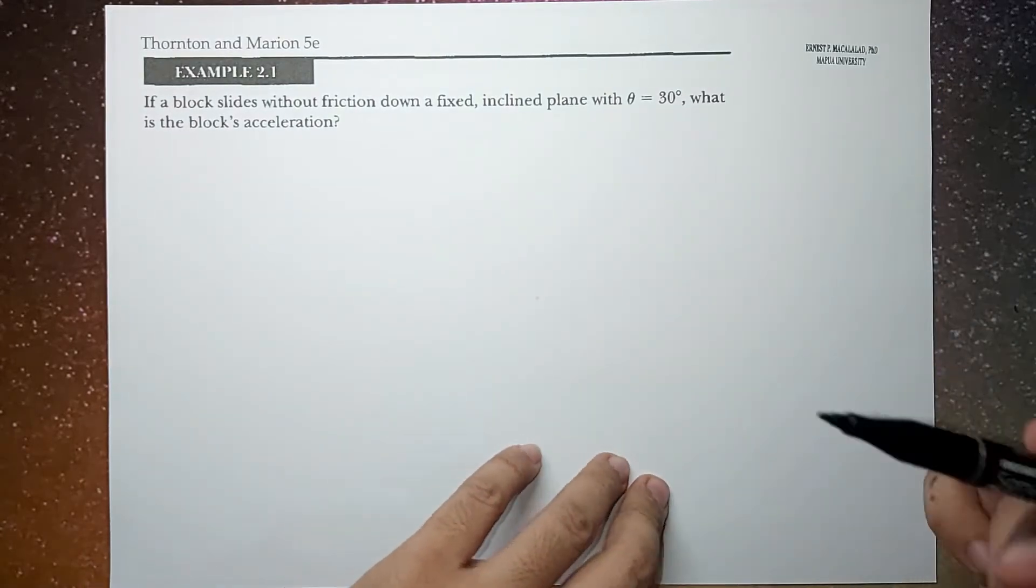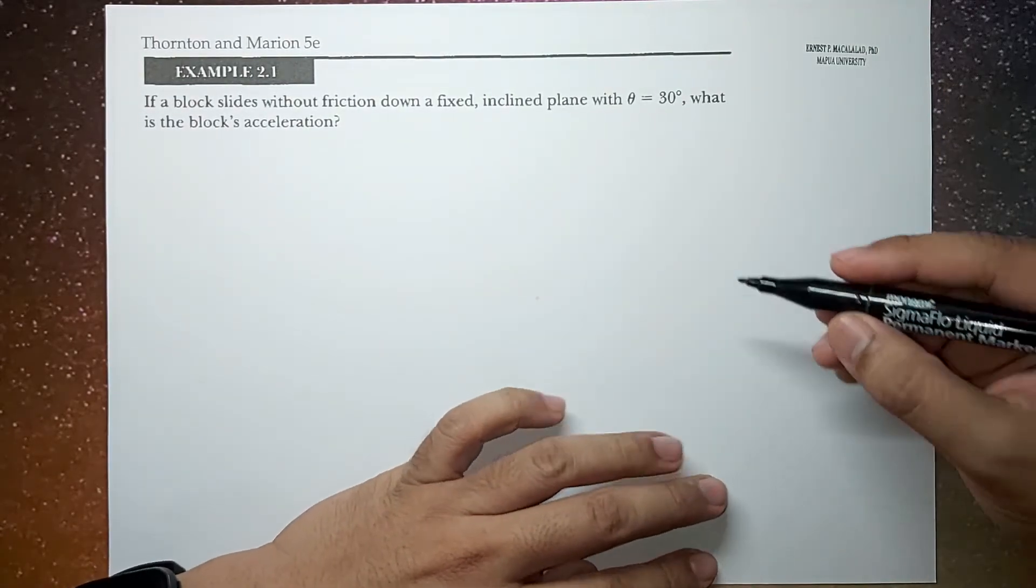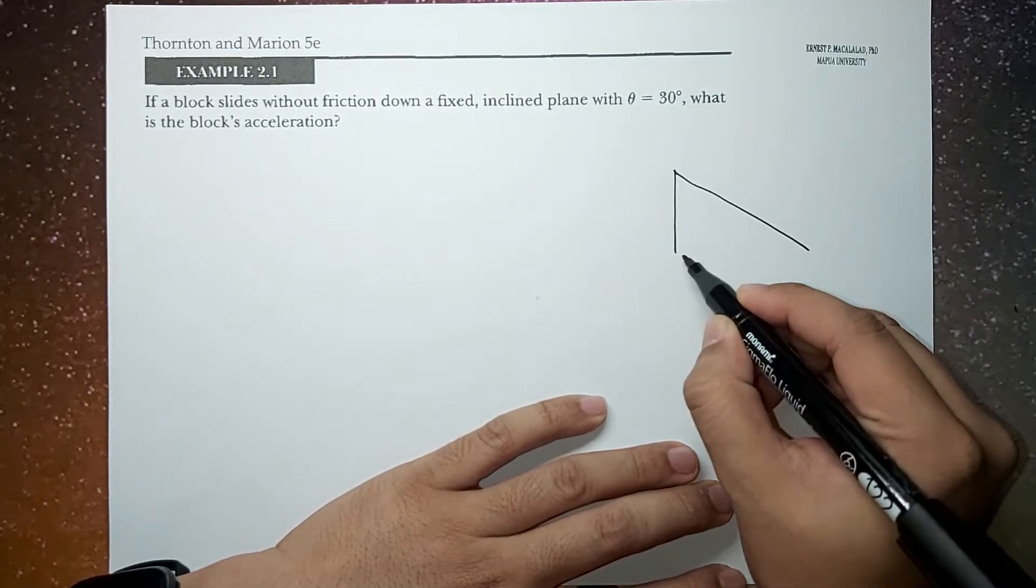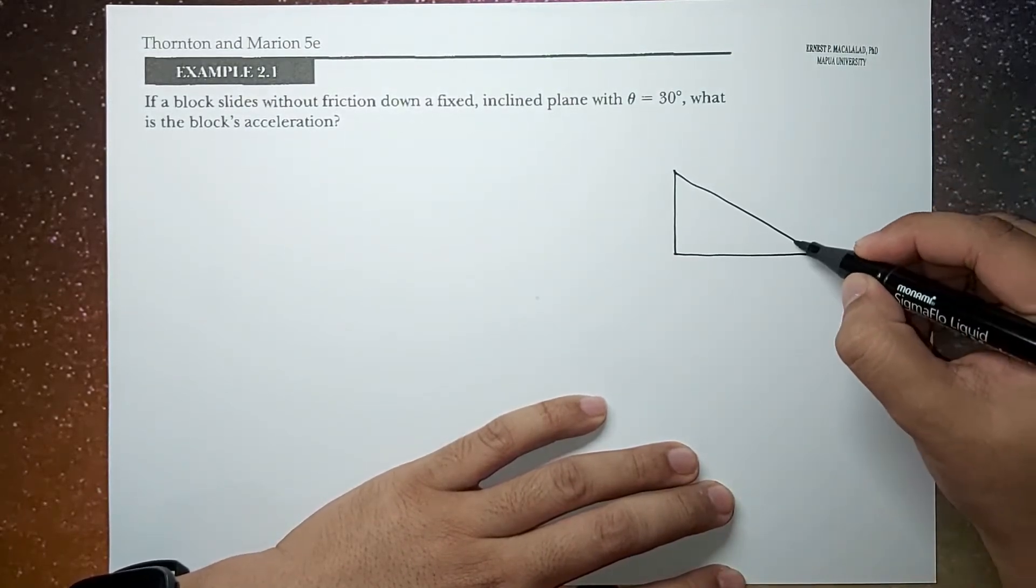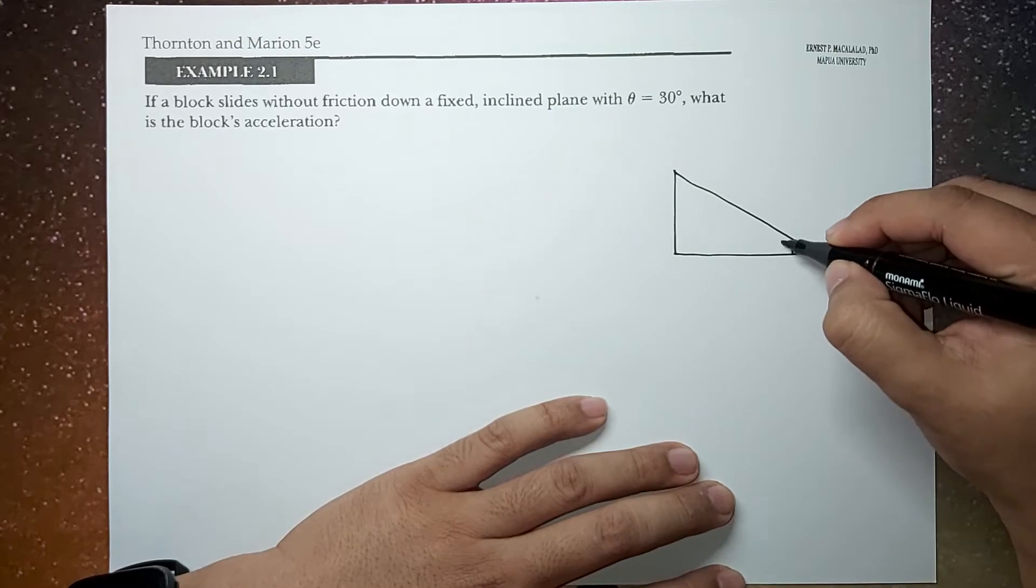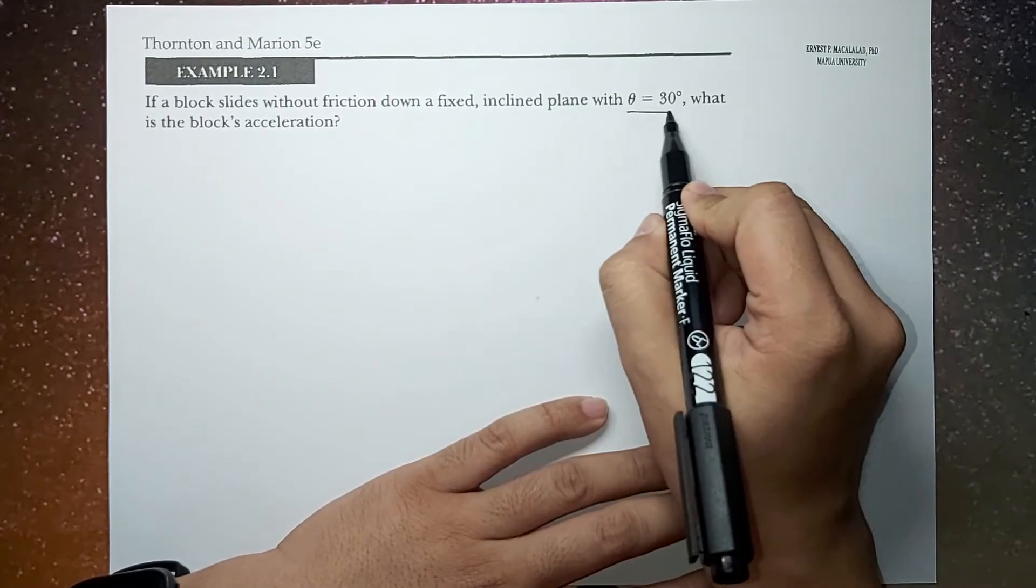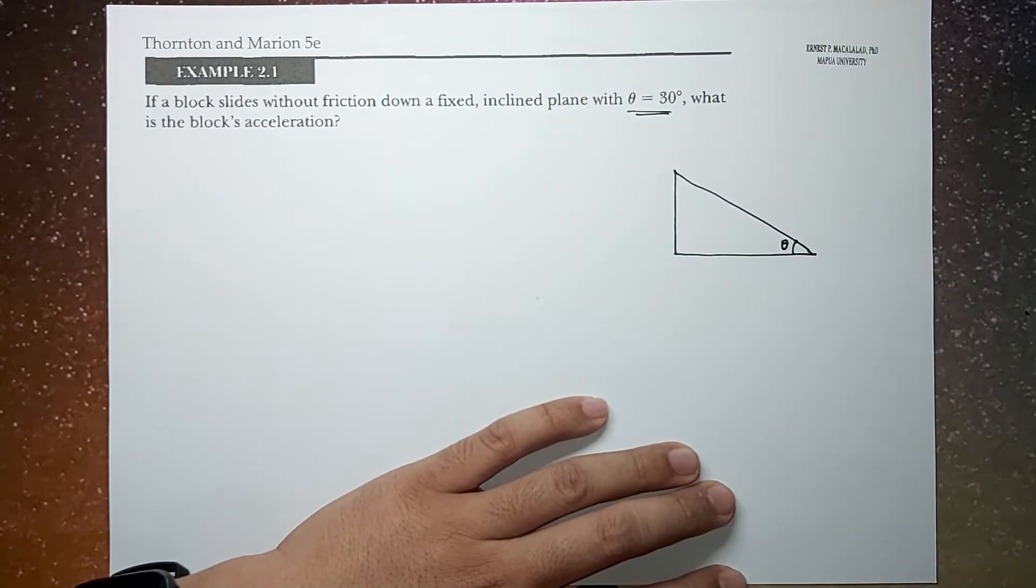Okay, so let's first draw this problem. So this is your inclined plane. The angle of the inclined is theta, and in this case, this is 30 degrees. And then, let's identify the coordinates.